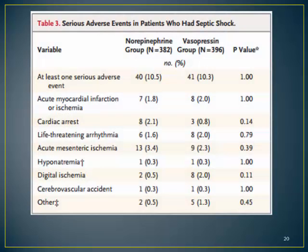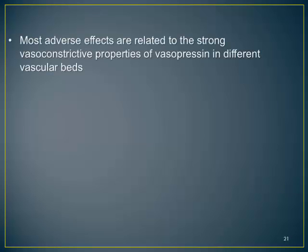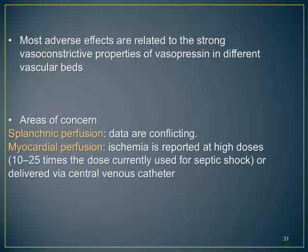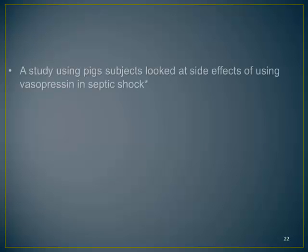The adverse effects reported in the VAS trial show few differences between vasopressin and norepinephrine groups. Hyponatremia occurred in only one patient out of almost 400, which is quite low and unexplained. Most adverse effects relate to the vasoconstrictive properties of vasopressin, depending on which vascular bed is affected. The two major areas of concern are cardiac and mesenteric circulation. Cardiac ischemia is not a major concern at standard doses, but has been reported with central venous administration, which is common practice.